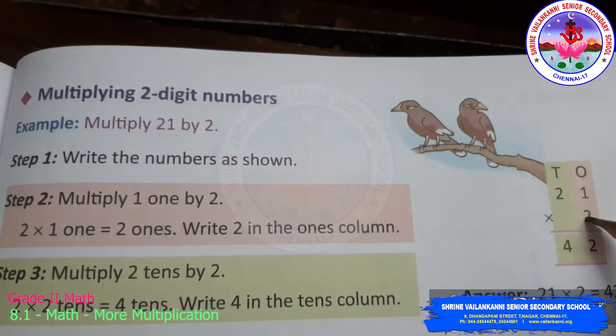First multiply the one. Two ones are two. Then you get the answer. You write it. Then you go to the tens. You multiply this number with the number in the tens part. Two twos are four.